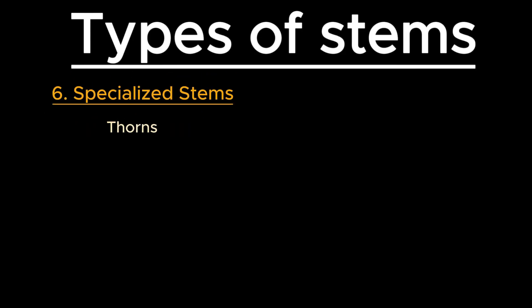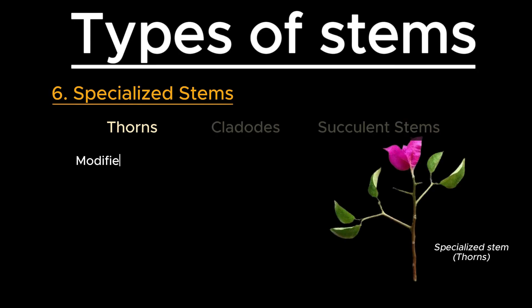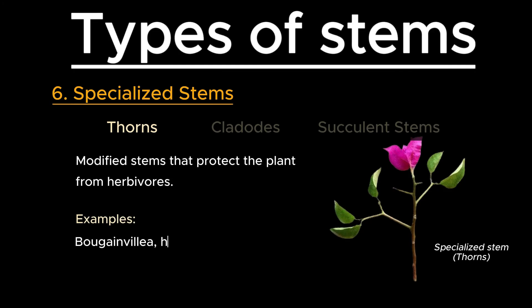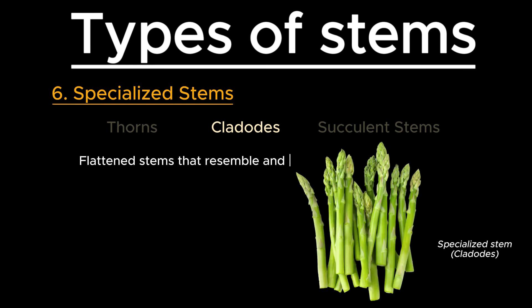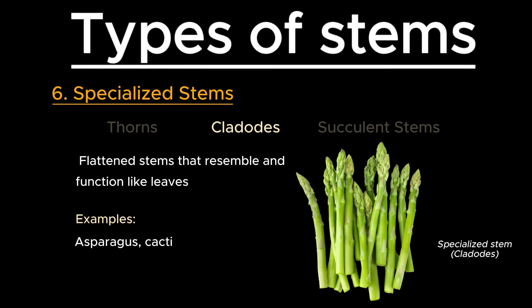Then we have specialized stems, such as thorns, cladodes, and succulent stems. Thorns are modified stems that protect the plant from herbivores — examples include bougainvillea and honey locust. Cladodes are flattened stems that resemble and function like leaves, such as asparagus and cacti.